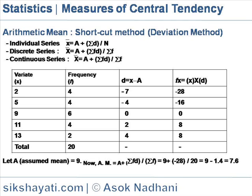The fourth column shows the frequency f multiplied by deviation d. The total of fd and the last row shows the total of each respective column. So, AM = a + Σfd / Σf = 9 + (−28) / 20 = 9 − 1.4 = 7.6. We can take any assumed value — if we take an assumed value of 11 or 5 instead of 9, we would get the same value of the mean.